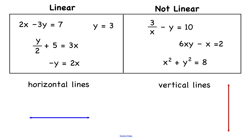Now we'll tell whether a function is linear and if so, write it in standard form to identify coefficients a, b, and c. For the first example, 2x = y/3 − 4: multiply every term by 3 to get 6x = y − 12, then subtract y from both sides to get 6x − y = −12. So a = 6, b = −1, and c = −12.